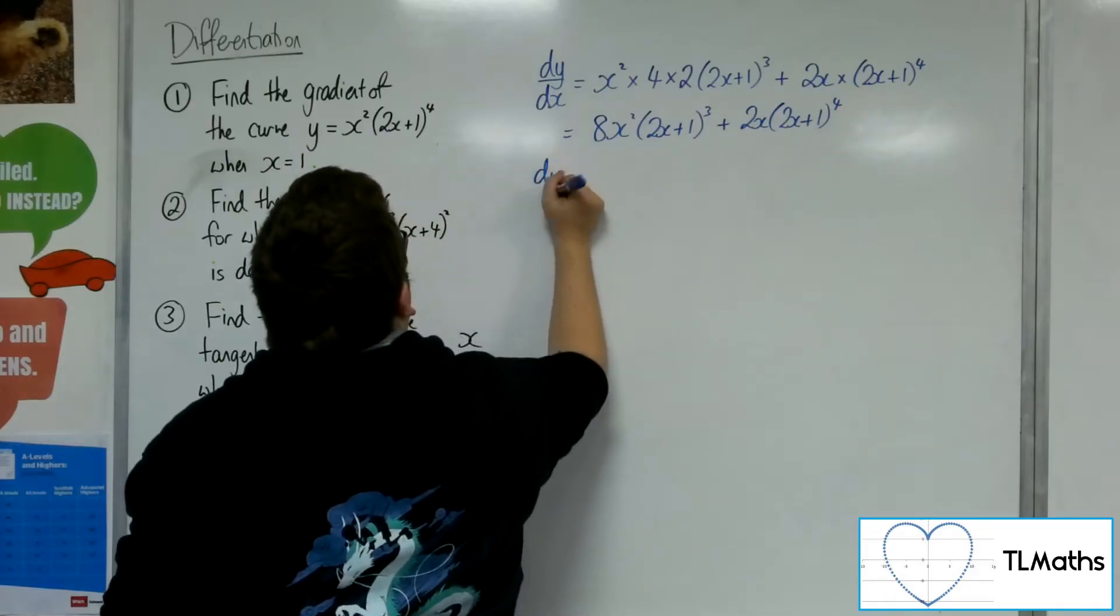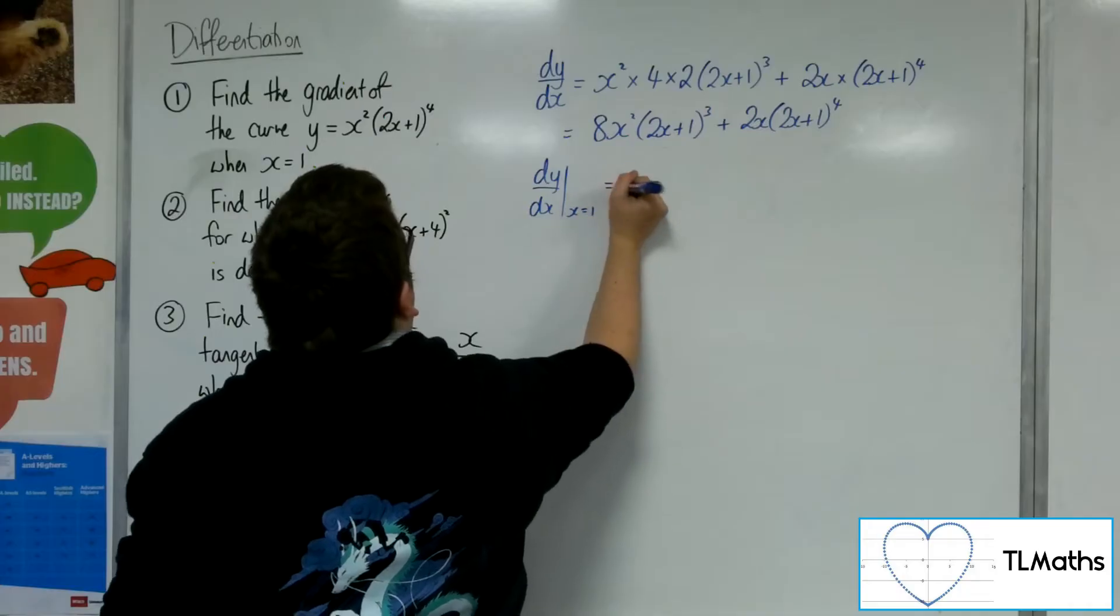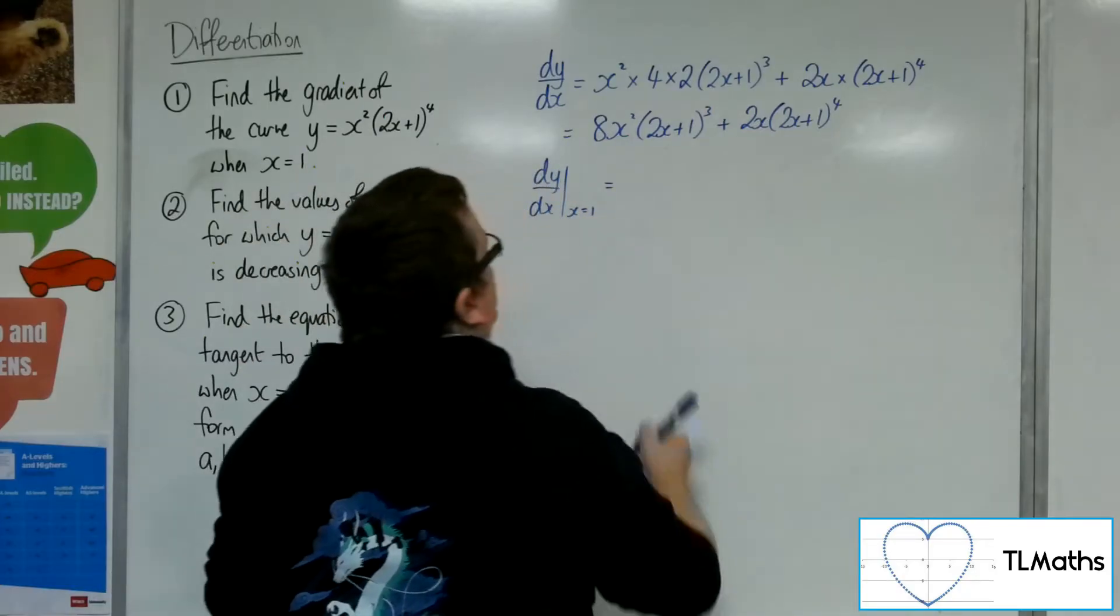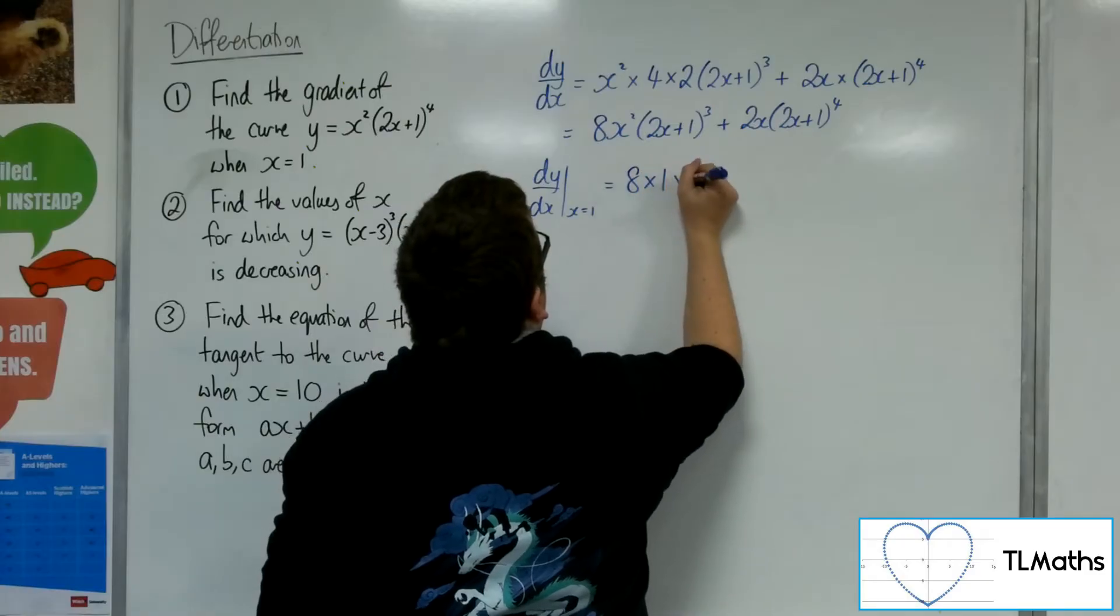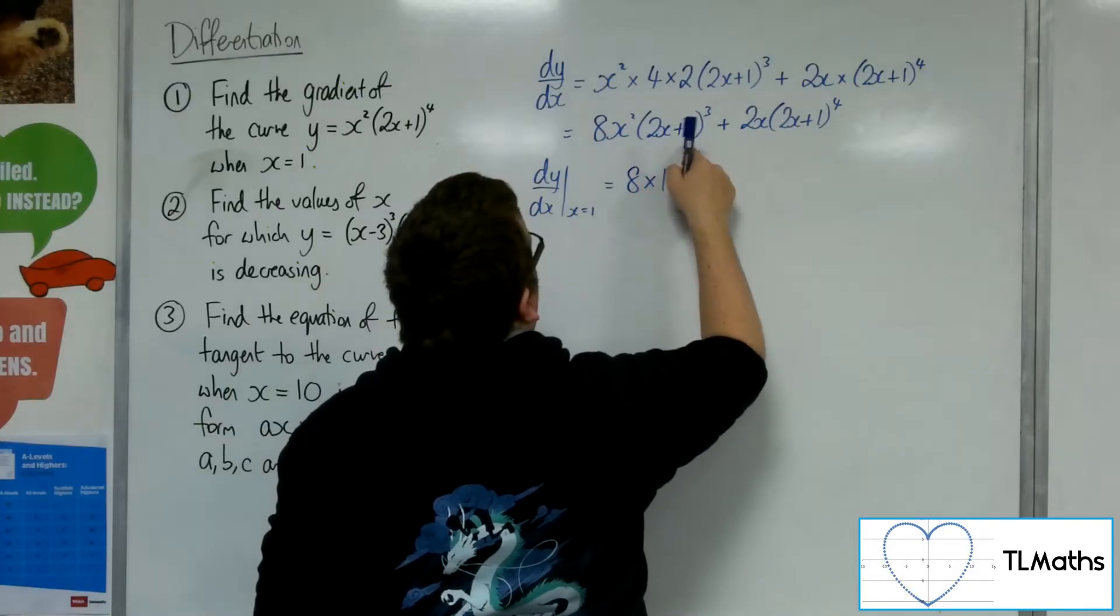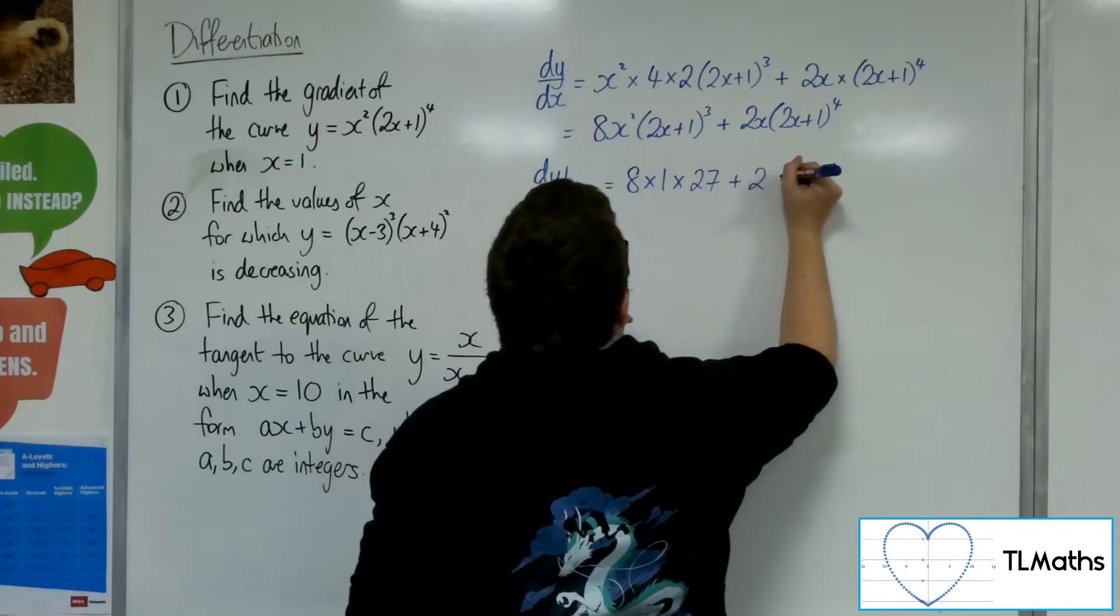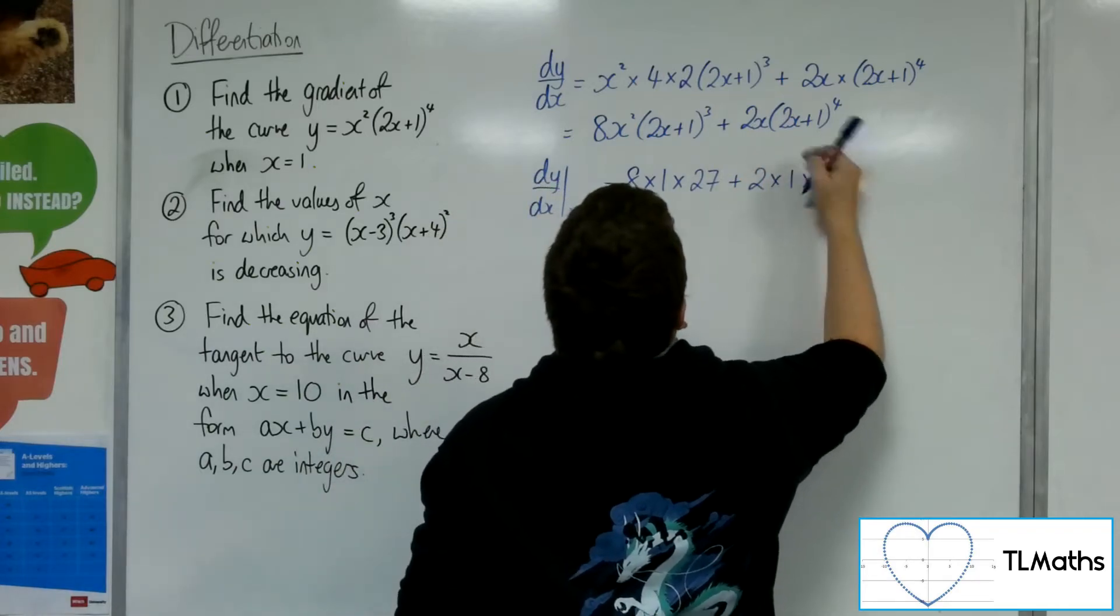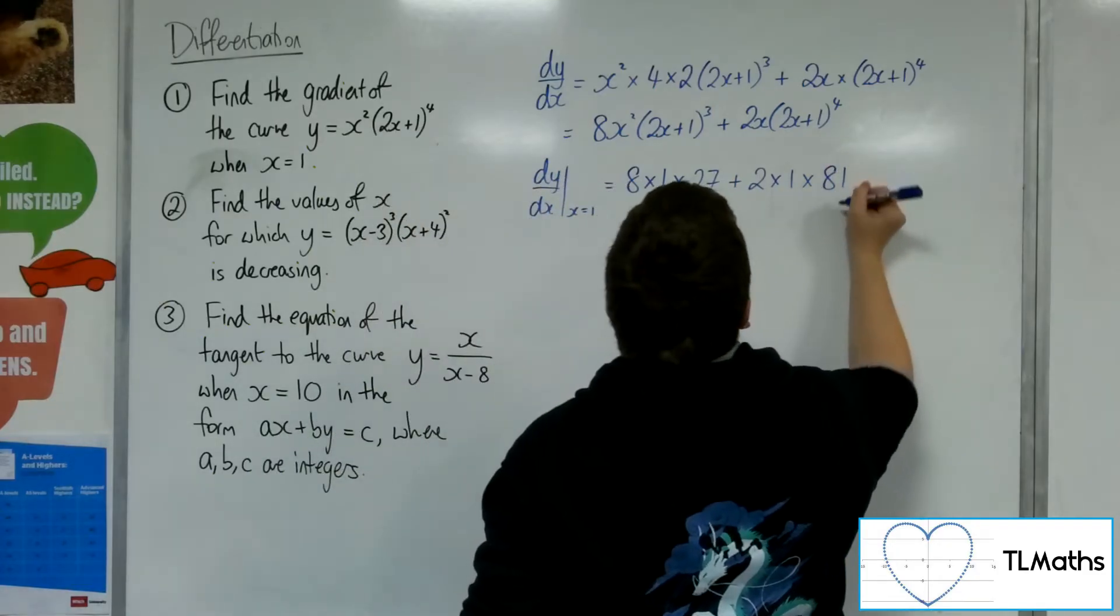So I want to evaluate that when x is 1. So substituting in x is 1, we're going to have 8 times 1 times 3 cubed, so 27, plus 2 times 1 times 2 plus 1 is 3, 3 to the 4 is 81.